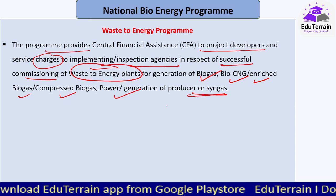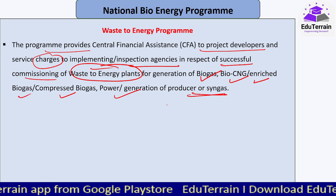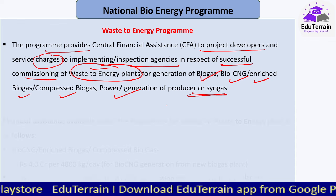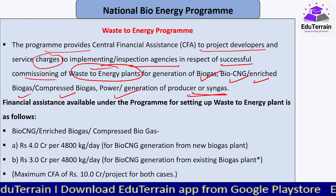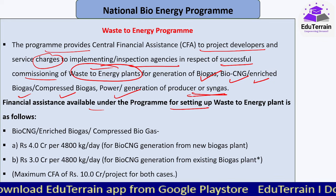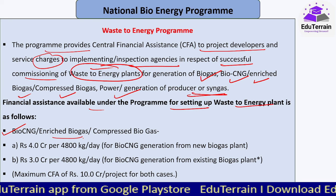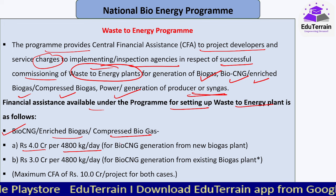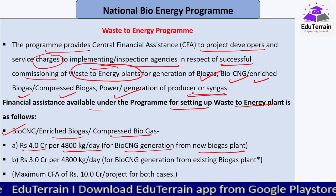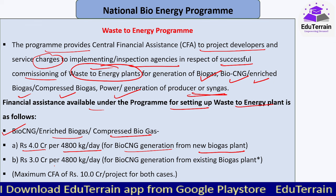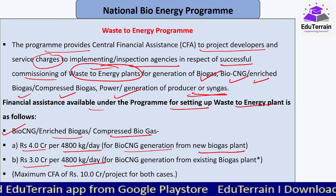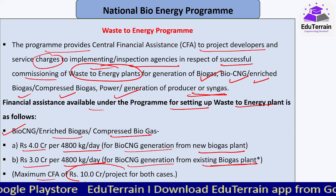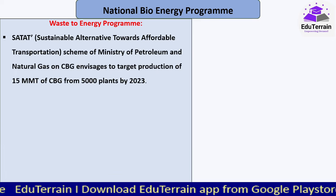The financial assistance available under the Waste to Energy Program for bio-CNG or enriched/compressed biogas: for a new biogas plant, 4 crores per 4,800 kg per day capacity; for existing biogas plants being expanded or renovated, 3 crores per 4,800 kg per day capacity for bio-CNG generation. The maximum CFA in both cases would be 10 crores per project.